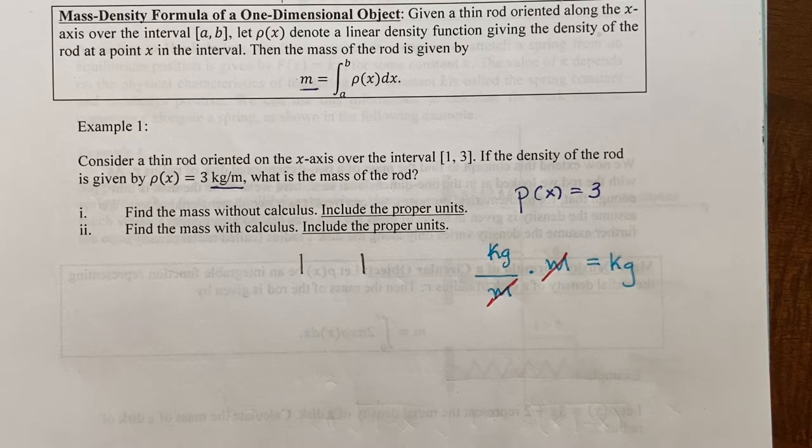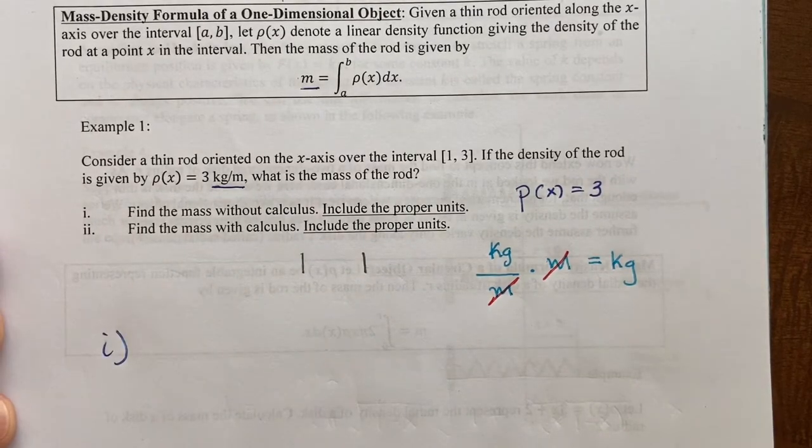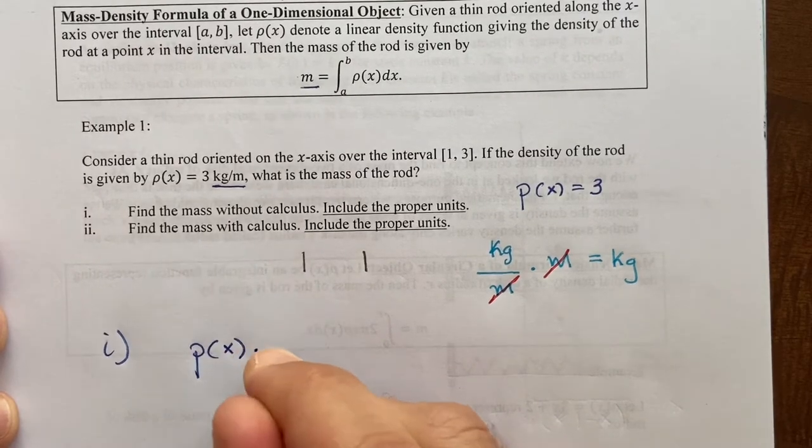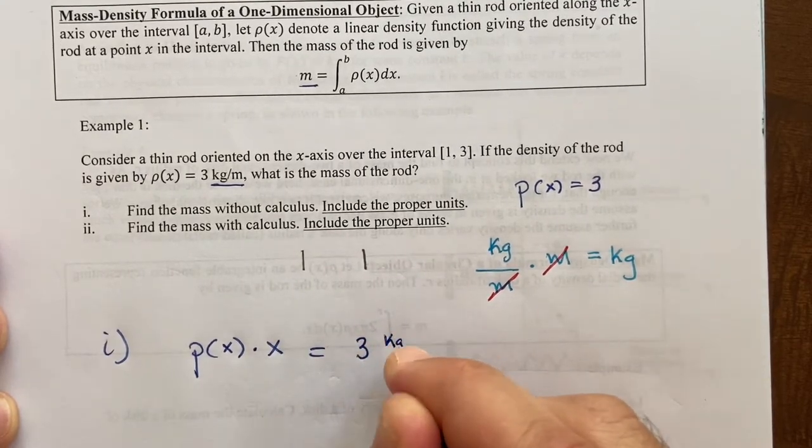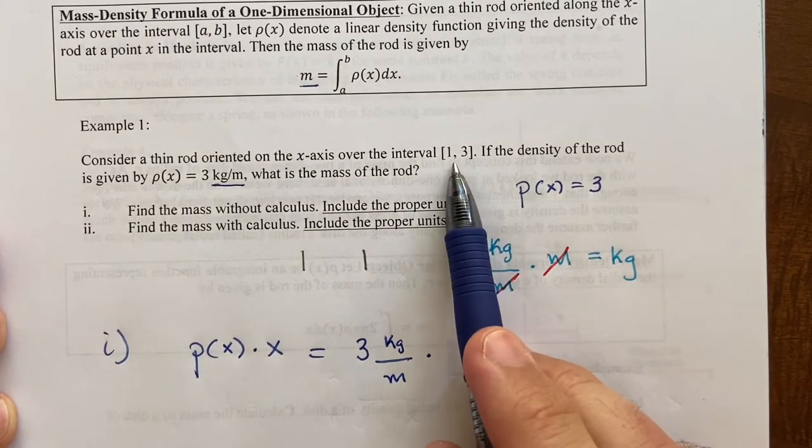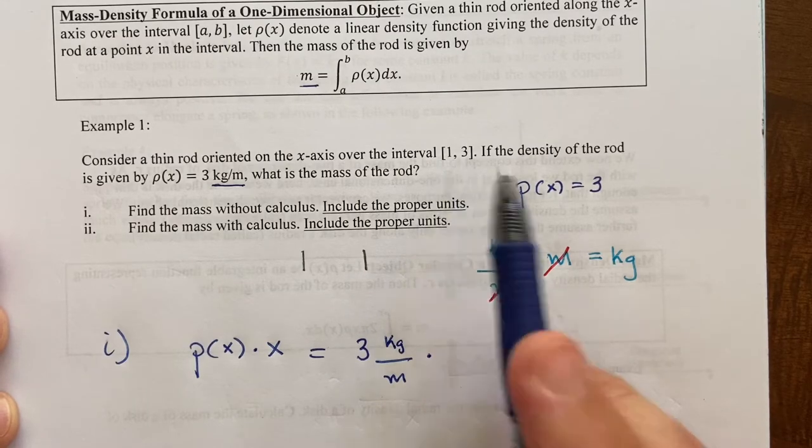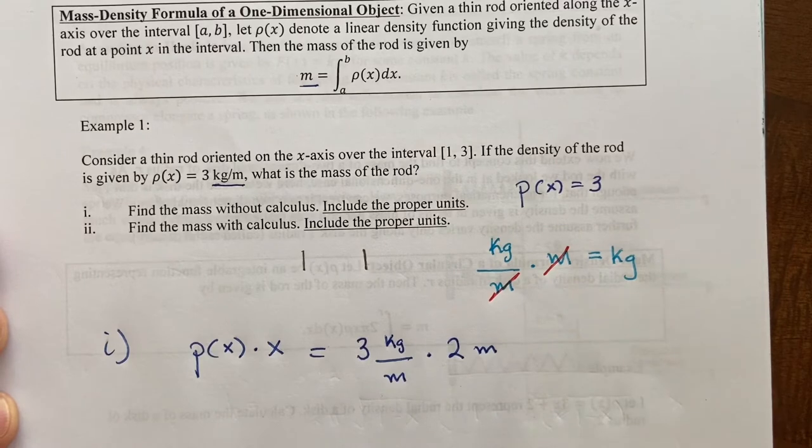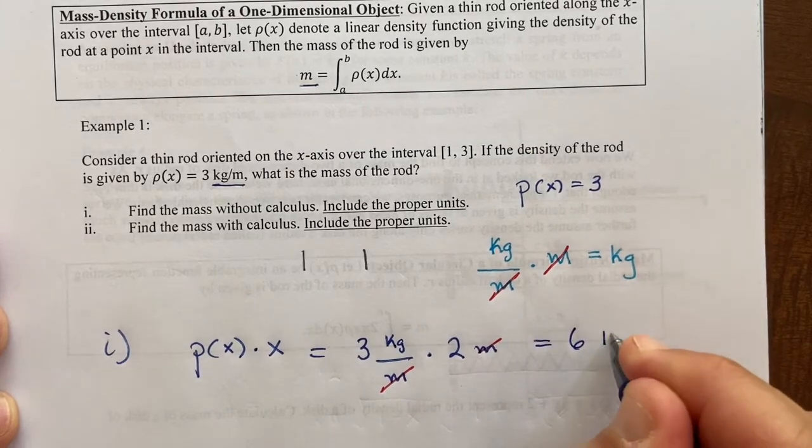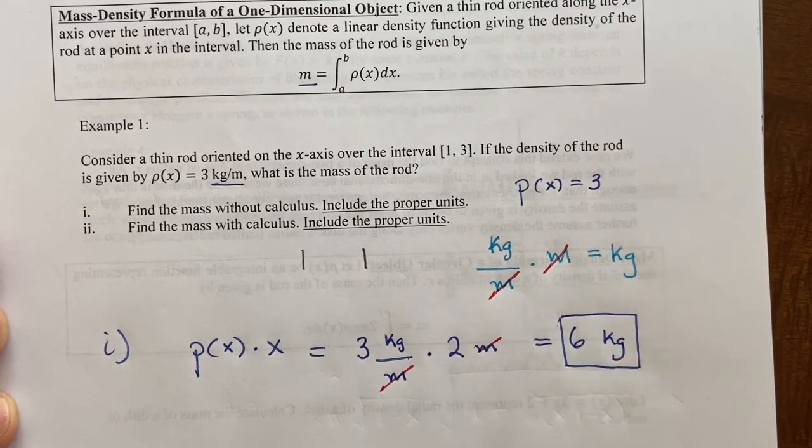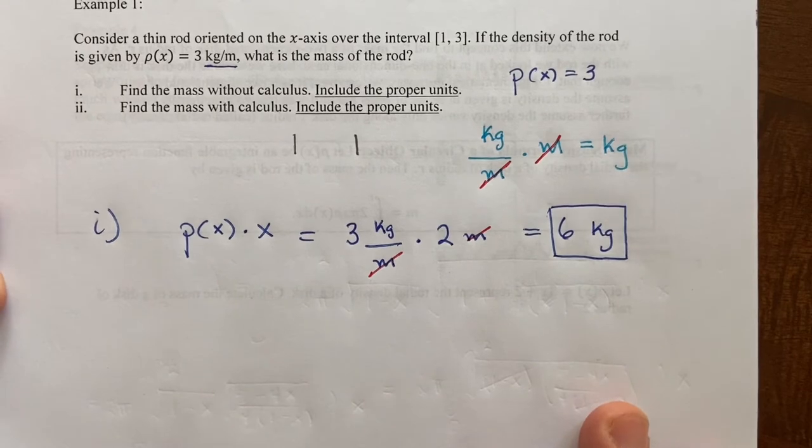So part one, I need to put my pen back together. So part one says, find the mass without calculus. So this is possible in this case because we have a constant density function. So without calculus, we would take rho and multiply by x, just the length. So I'm taking three, and this would be kilogram per meter, and I'm multiplying one to three. That's two. So I'll multiply by two meters. What will happen is these meters will cancel, and then I'll just be left with six kilograms. So that's totally possible because we have this constant density function. All right, so that's part one.